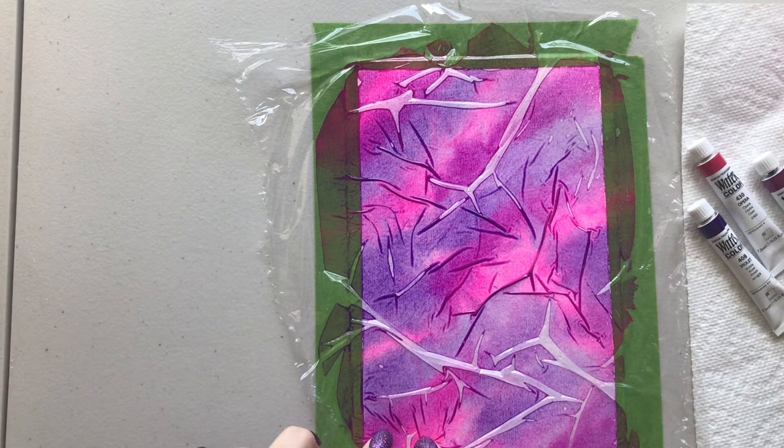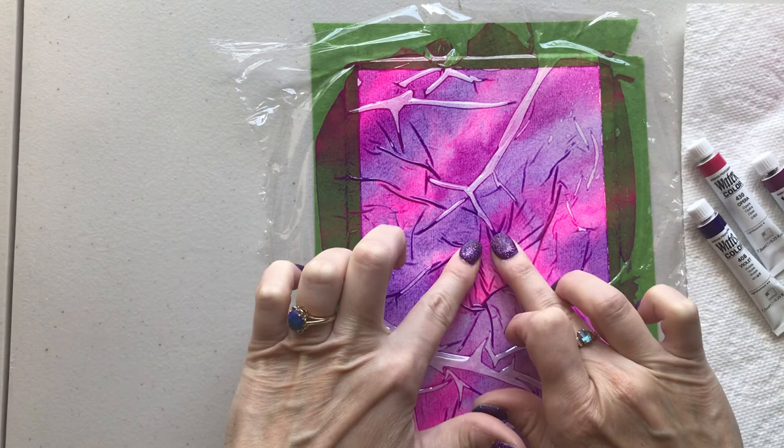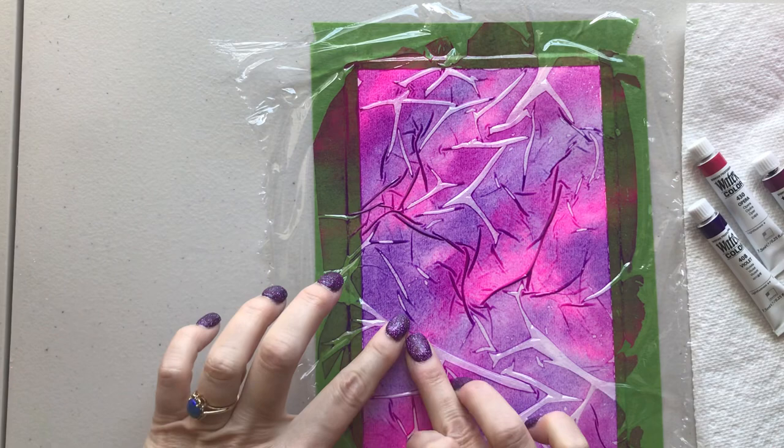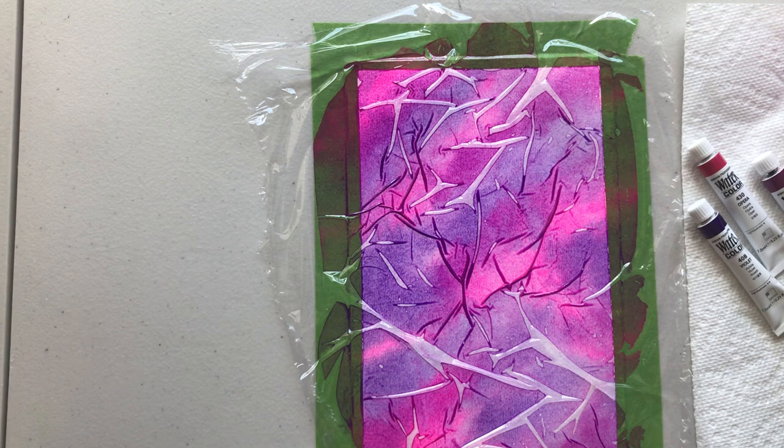So do you see how it's now forming these little white gaps? So I'm just going to create some more and just play with it. You can keep playing with it if it's really wet and that'll just push the paint into itself and into different directions. Try and make an even one and that's it you're going to have to let it sit like this overnight or until it's completely dry.